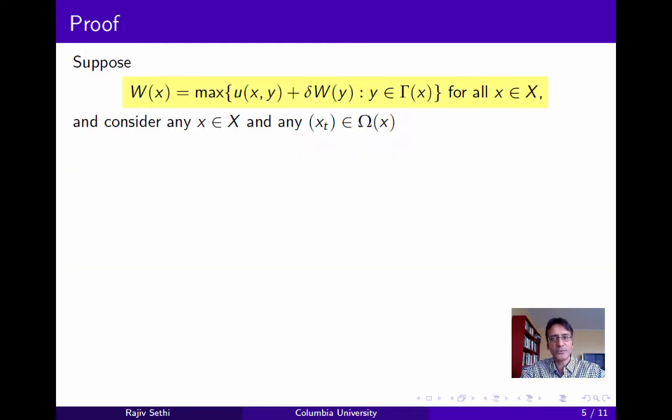Suppose that w is indeed a solution to the functional equation, and consider any point x in the metric space, and any feasible path xt. Now clearly, the inequality shown on the slide holds, because we know that x1 is feasible starting from x. And either x1 maximizes the expression u of xy plus delta w of y, or it doesn't. If it does, then we have equality, and if it doesn't, then we have strict inequality. Either way, the weak inequality holds.